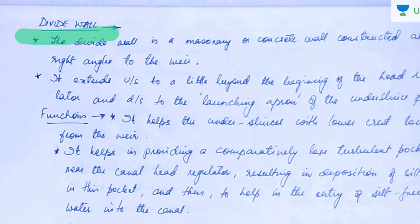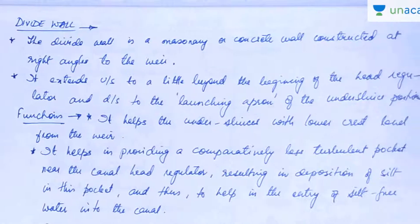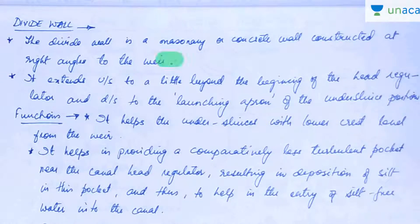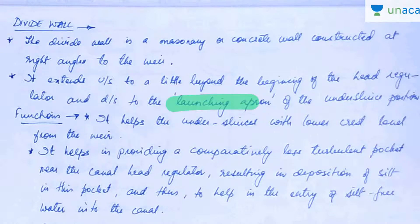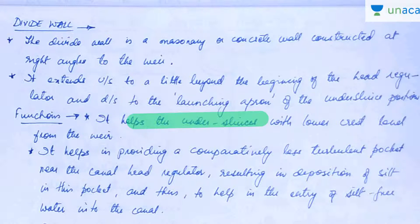Let's see why we provide a divide wall. A divide wall is a masonry or concrete wall constructed at right angles to the weir. It extends upstream to a little beyond the beginning of the head regulator, and downstream to the launching apron of the under sluices portion.